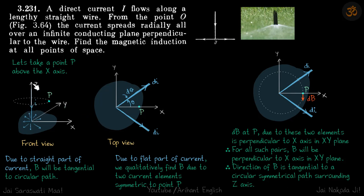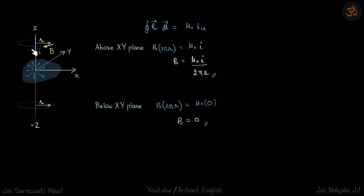Therefore, for all such pairs, B will be perpendicular to x axis in XY plane. We have taken this random angle theta. If you take any other two pairs, and keep taking all the pairs, you will complete the whole plane. For all such pairs, B will be perpendicular to x axis in XY plane. Therefore, direction of B is tangential to a circular symmetrical path surrounding Z axis.